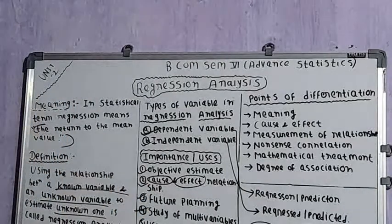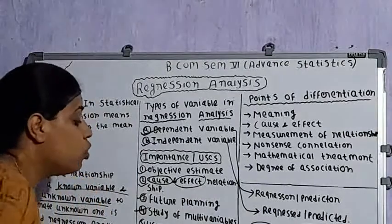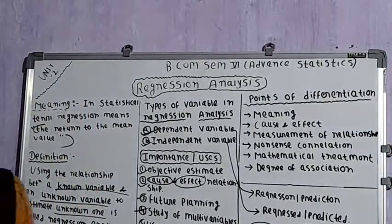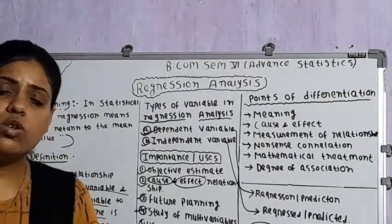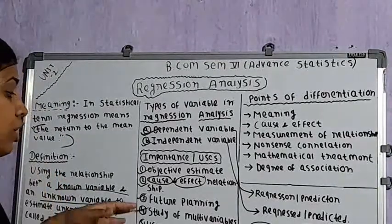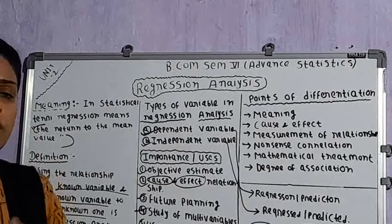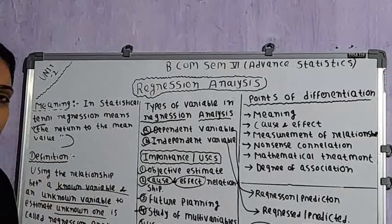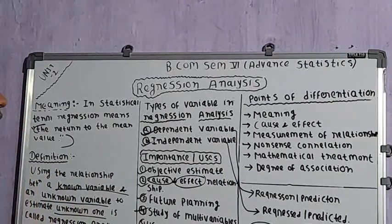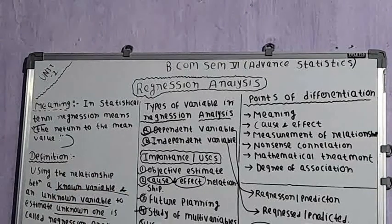The next use is in the coefficient of correlation. With the help of regression analysis, we can also calculate the degree of correlation between two variables and get to know to what extent the variables are related with each other. These are the different uses and importance of regression analysis in the practical world.